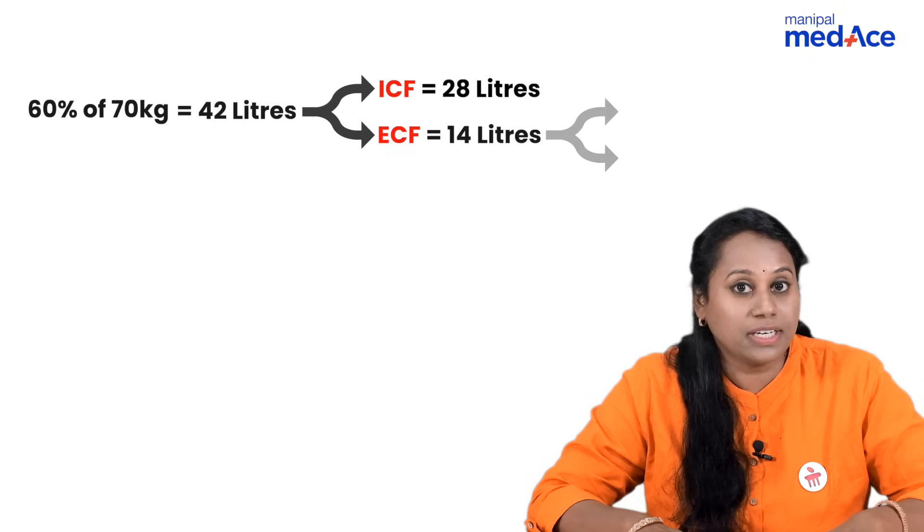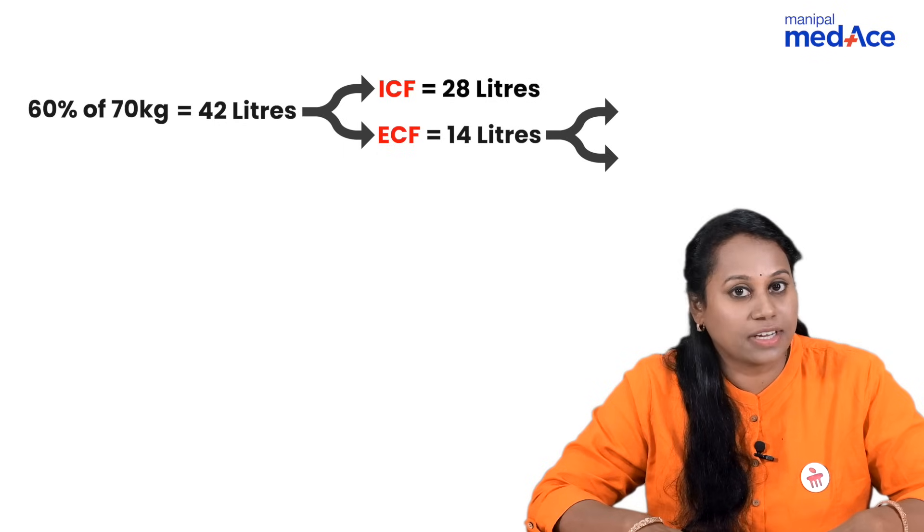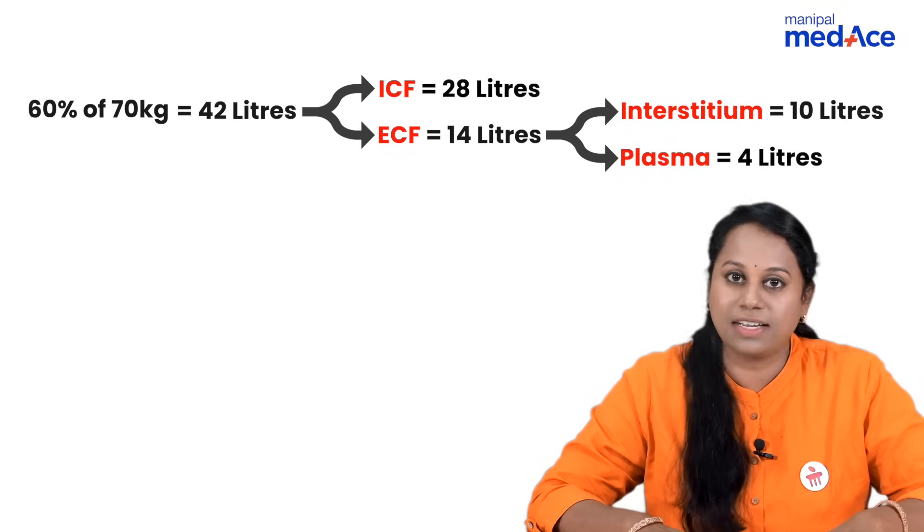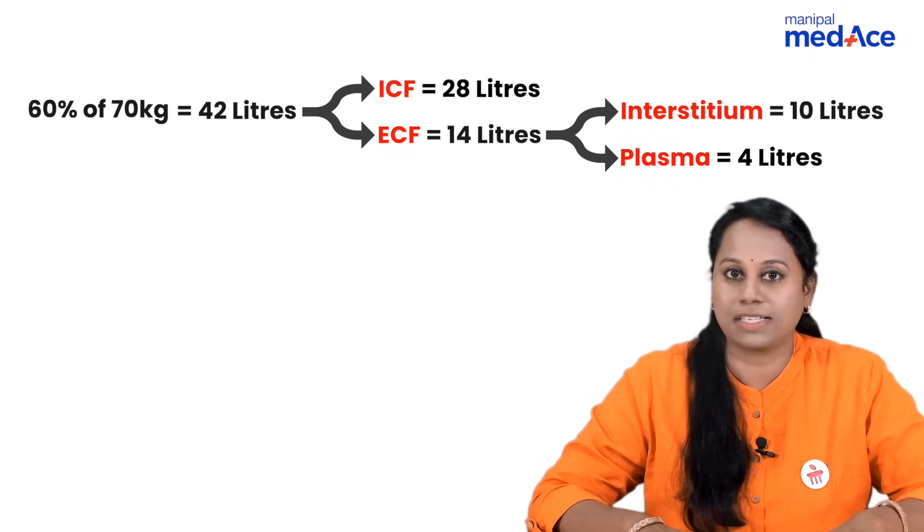The 14 liters ECF is again divided as 10 liters interstitium and 4 liters plasma. This is how body fluid compartments are divided in any average adult male of 70 kg.